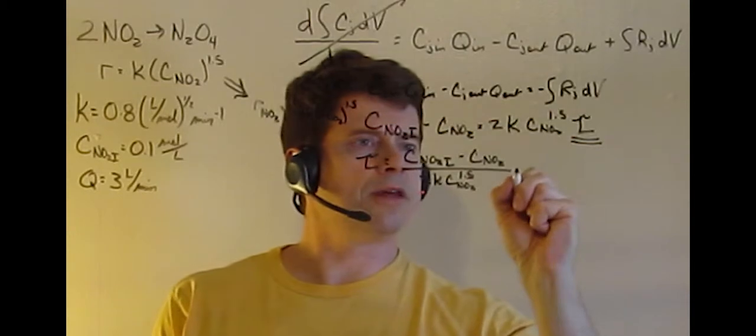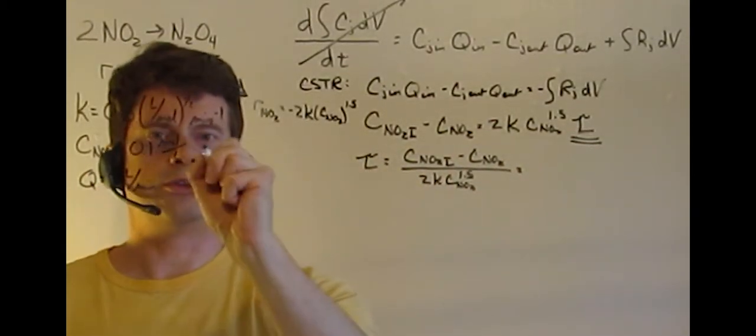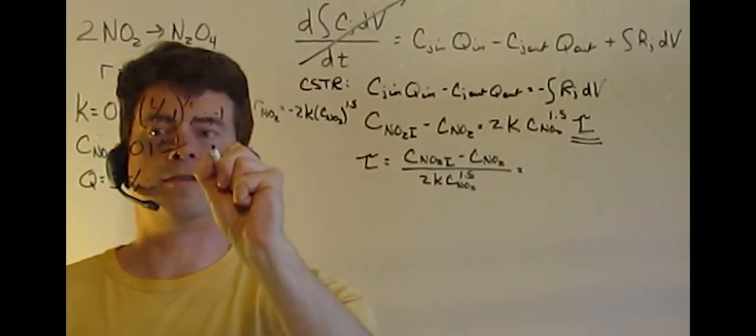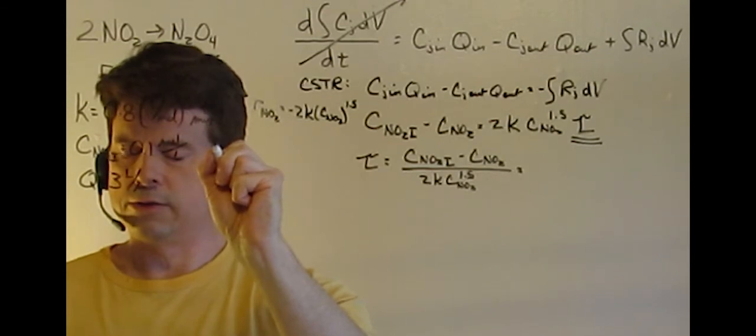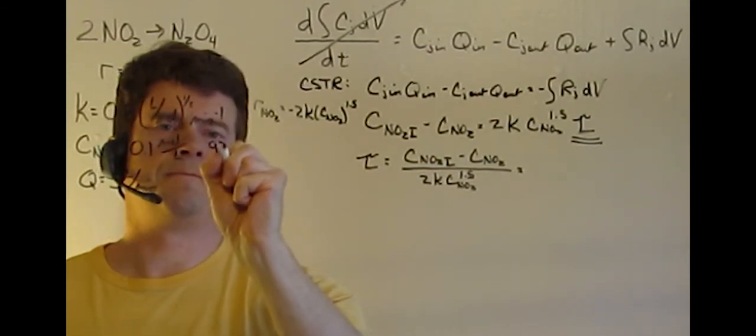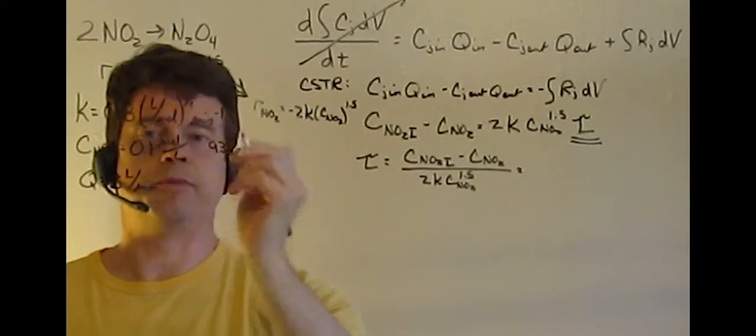The only other thing we need to solve for is our concentration of NO2 at final. In this case, since we've been told that our yield is 93%, that means what we have left is only 7%,